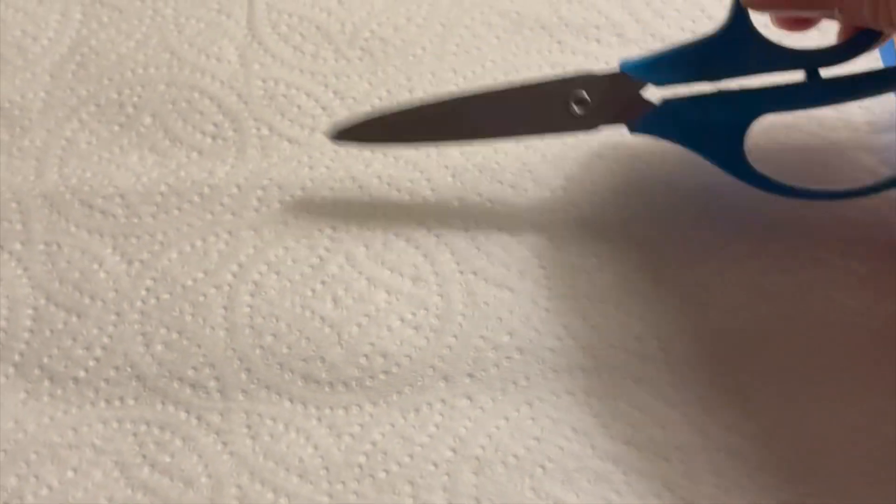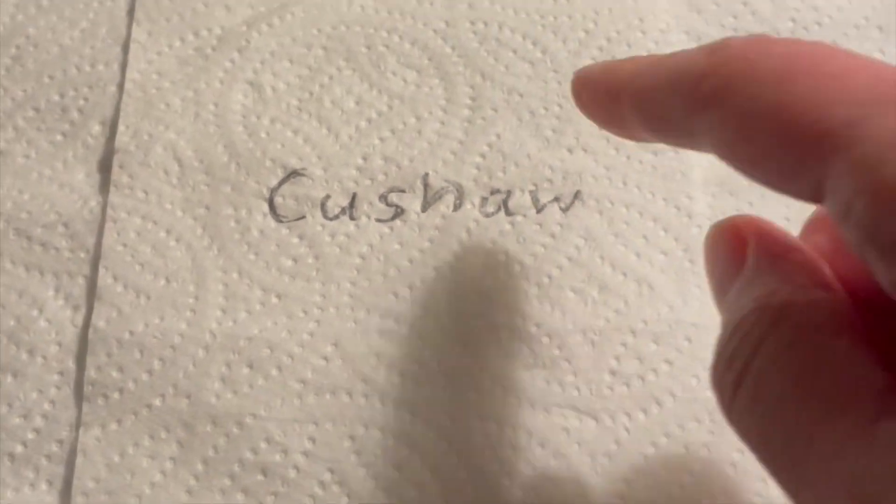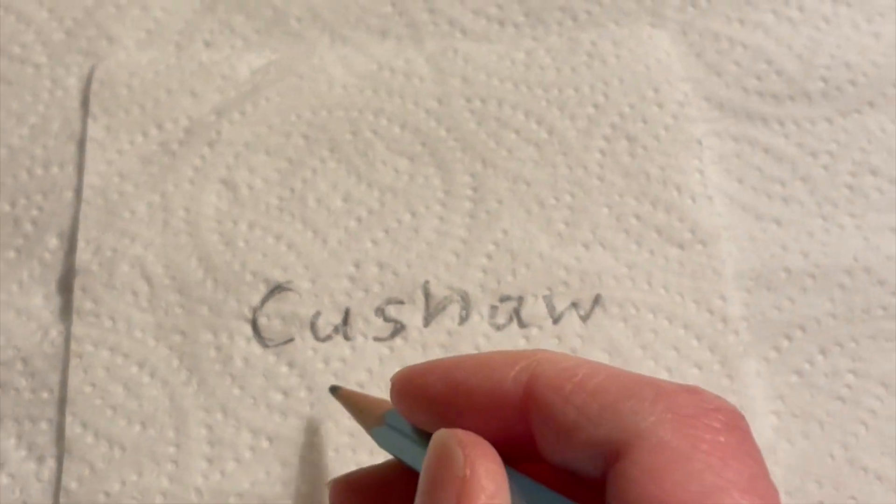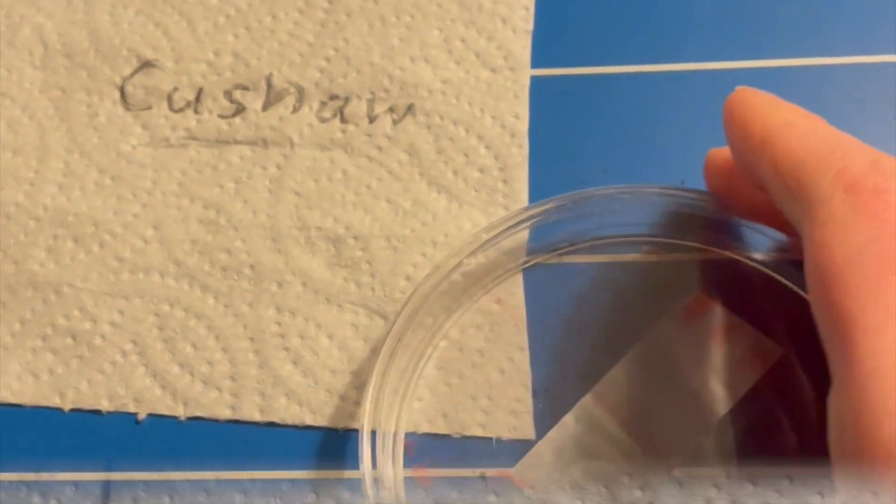Begin with some ordinary kitchen roll or paper towel. What you will do next is cut out squares of the kitchen roll and write the name of your squash variety with pencil. Pencil does not smear when it gets wet, so pencil is the ideal way to label.